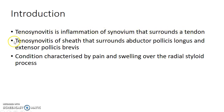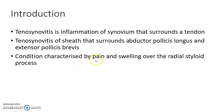De Quervain's tenosynovitis is tenosynovitis of the sheath that surrounds the abductor pollicis longus and extensor pollicis brevis tendons. It is named after Swiss surgeon De Quervain. It is basically a condition characterized by pain and swelling over the radial styloid process.